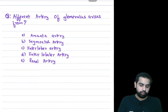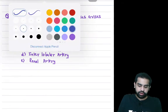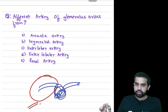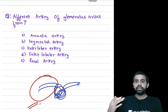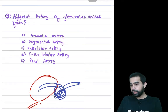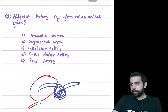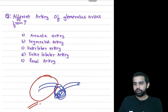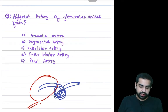Next question: afferent arterioles of the glomerulus — what are they a branch of? Options: arcuate artery, segmental artery, interlobular artery, interlobar artery, or renal artery? The correct answer is the interlobular artery — option D.